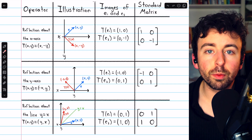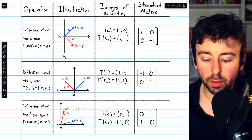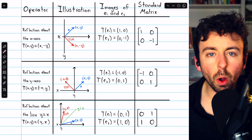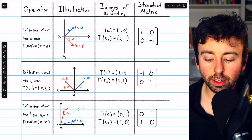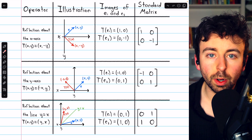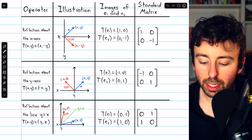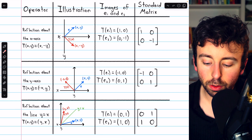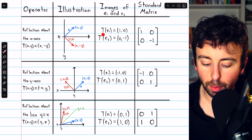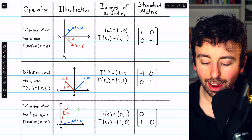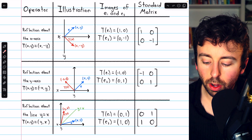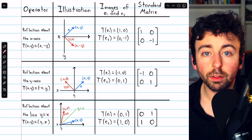The standard matrix of a matrix transformation depends totally on the images of the standard basis vectors under the transformation. So we take the standard basis vectors from the domain, which is R-squared, put those through the transformation of reflection about the x-axis, and then their images we use to build the columns of our standard matrix for this transformation.